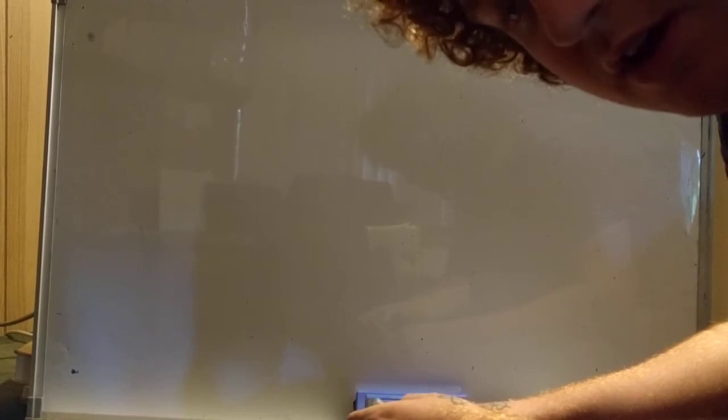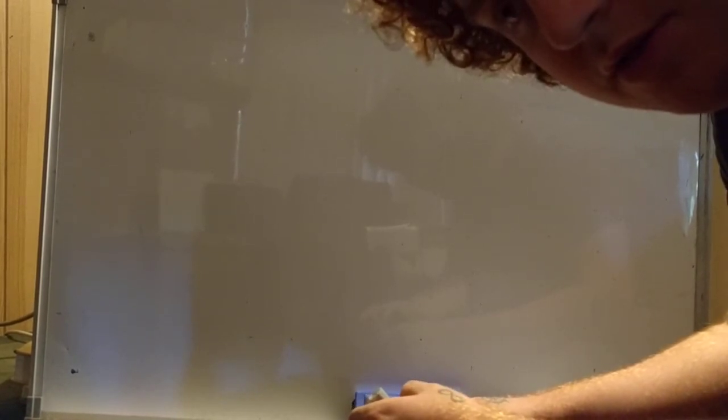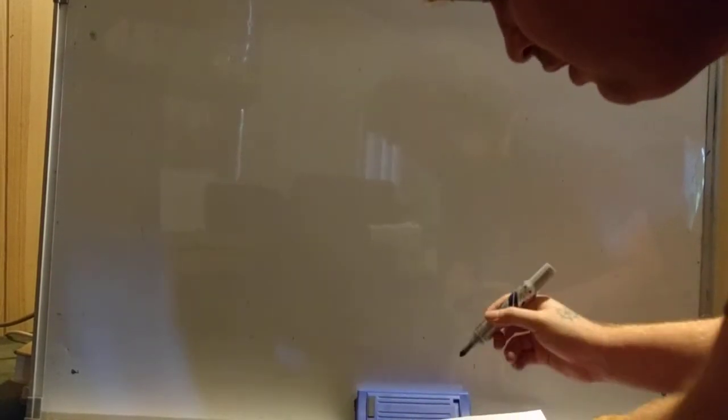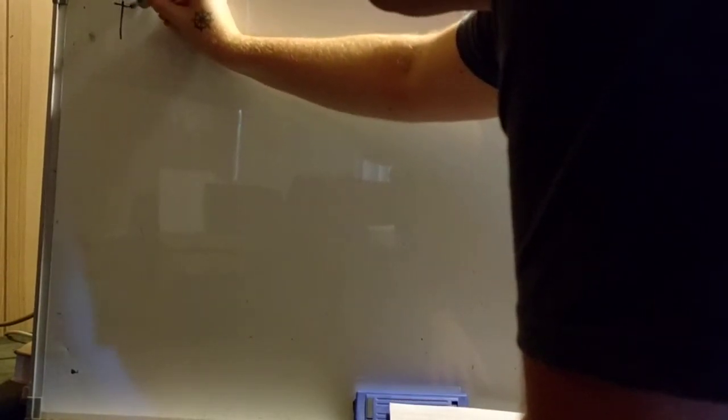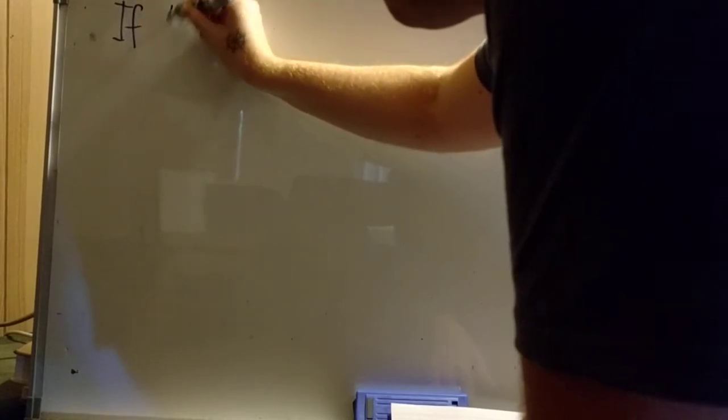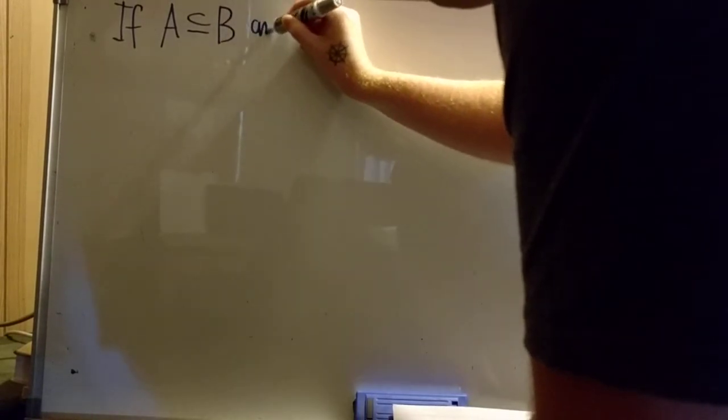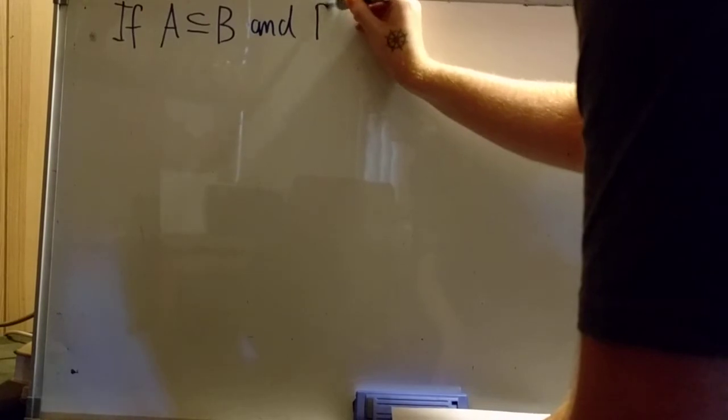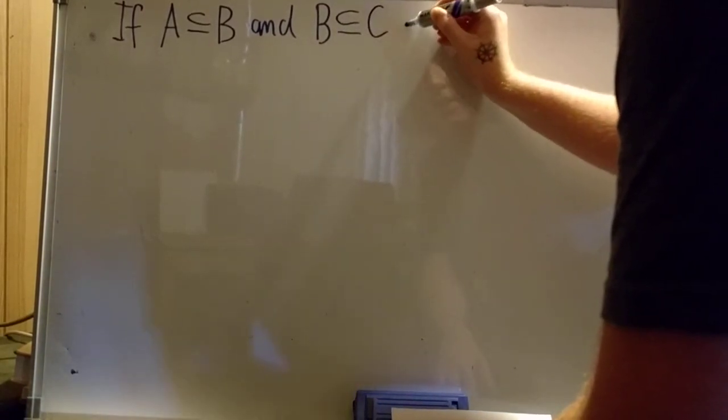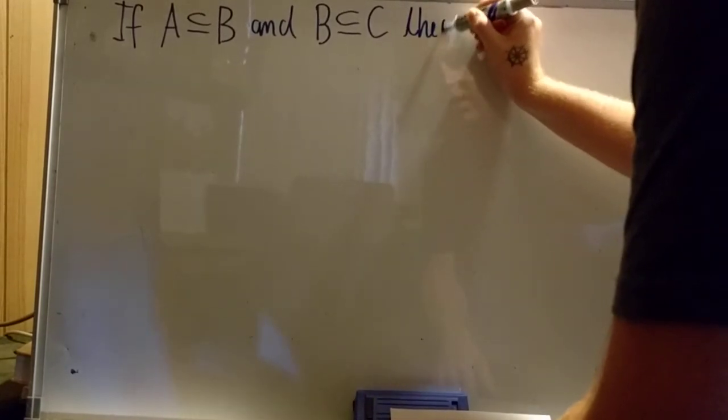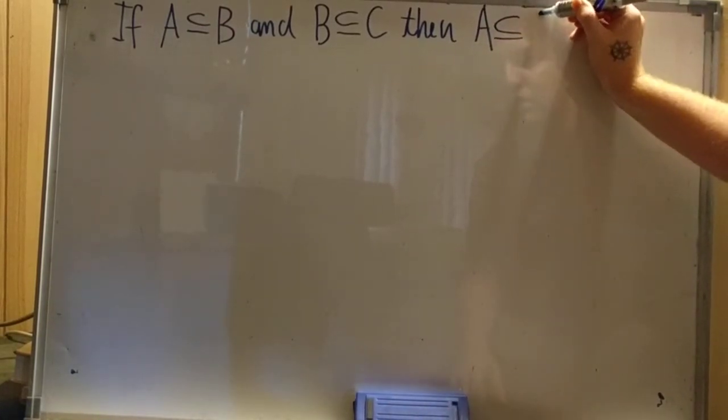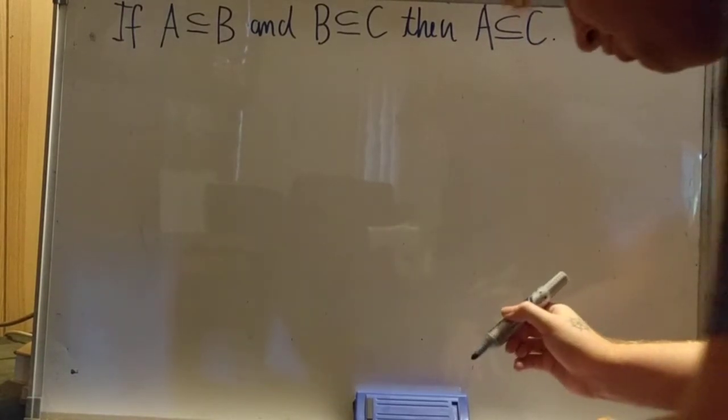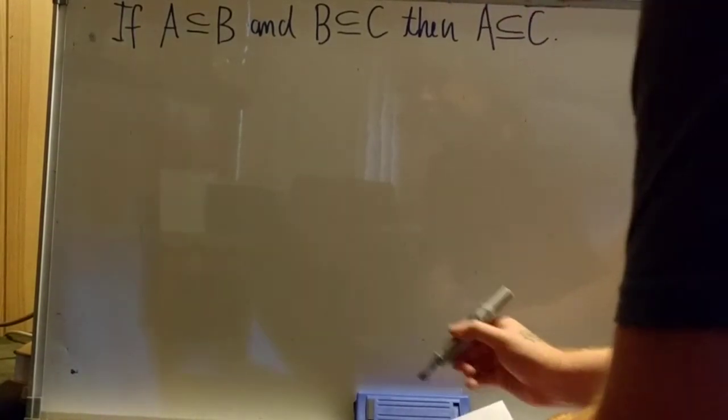This is basically a proof of the transitivity of the inclusion relation or the subset relation. Our theorem is: if A is a subset of B and B is a subset of C, then A is a subset of C. The proof goes as follows.